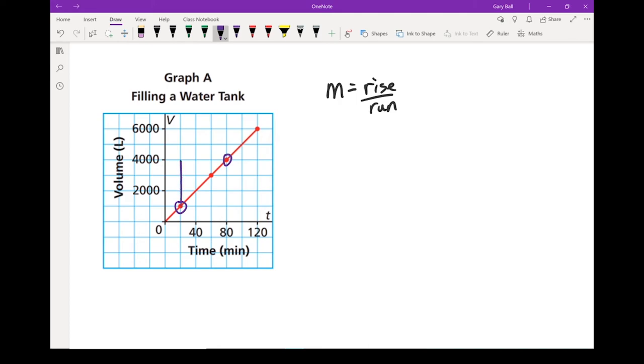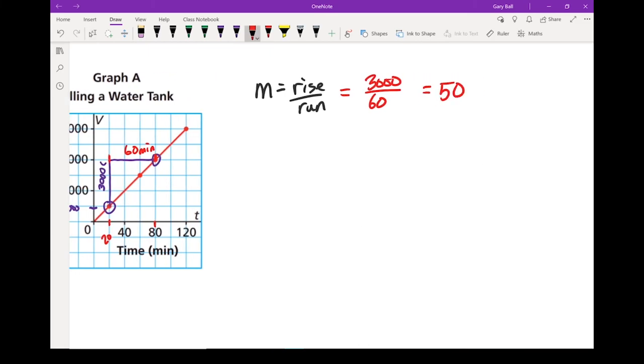So I've got a rise and I've got a run. I drew that triangle there. So when I take a look at my rise, first thing people want to say, well, that's a rise of three because that's three squares. No, it starts at a thousand and ends at 4,000. That's a rise of 3,000 liters. When I look at my run, I'm going from here to here. So that's 20 minutes to 80 minutes. That's a run of 60 minutes. So when I put it into my rate of change, we are looking at a rise of 3,000 divided by a run of 60. 3,000 divided by 60 equals 50.